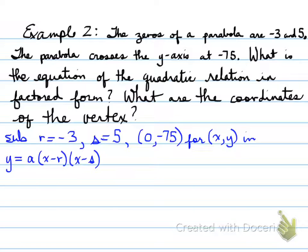Plug it in. We have negative 75 equals a times, y is negative 75 equals a, which we're trying to find. x is 0, r is negative 3, so it becomes 0 plus 3. x again is 0 minus s, so minus 5. We're going to multiply these values, and we're going to get negative 75 equals negative 15a. From that, we divide both sides by negative 15.